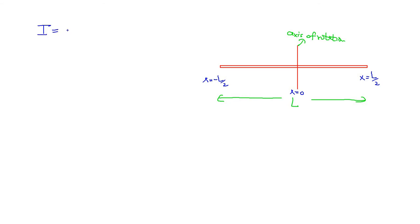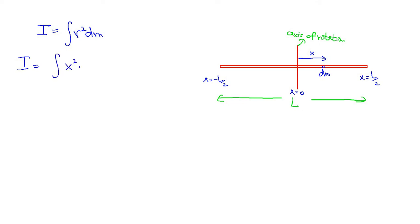The moment of inertia of a uniform object is the integral of r² times the small mass element dm. For this 1D problem, r² becomes x², so we integrate x² dm with limits from -L/2 to L/2.